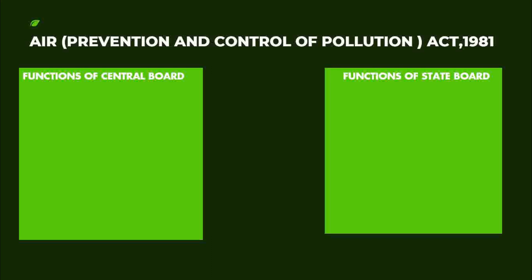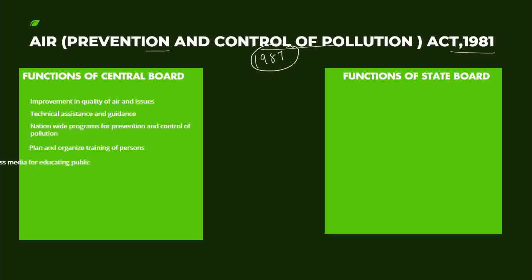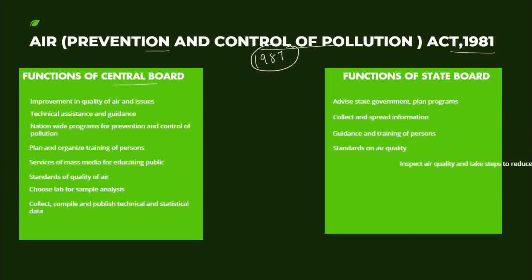Next is the Air Act for prevention and control of air pollution. This act was formed in 1981 and amended in 1987. There are two boards: one Central Board and one State Board. The Central Board operates at the central level and the State Board at the state level. They address the improvement in the quality of air — for example, the issue in Delhi where schools closed due to air pollution. This board sets the standard quality of air.